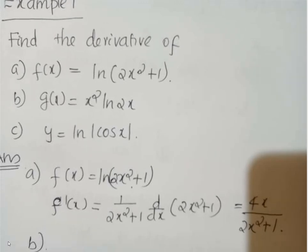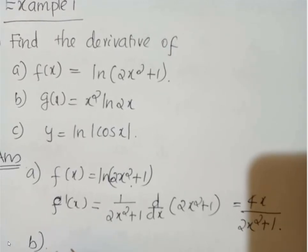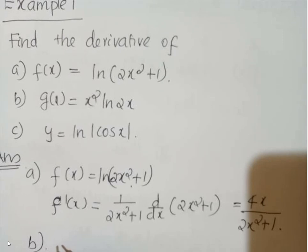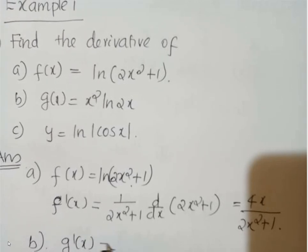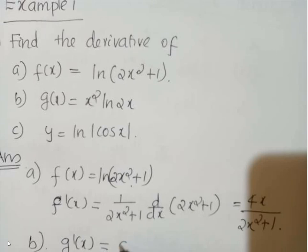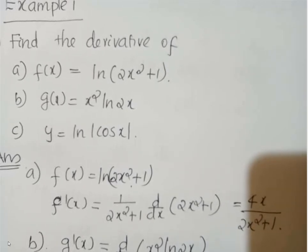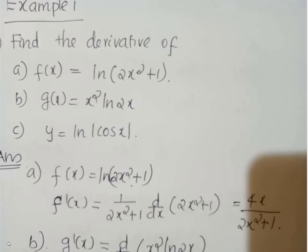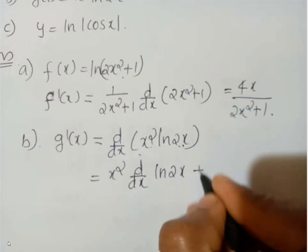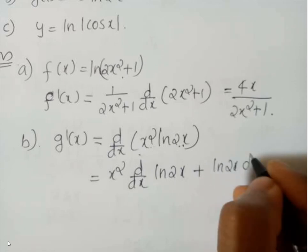Next is part b: g'(x) is the derivative of x² log(2x). For that, d/dx of x² log(2x) — you know that we have to use the product rule. That equals x² into d/dx of ln(2x) plus ln(2x) into d/dx of x².